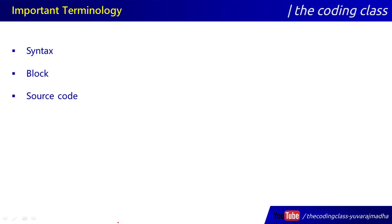Source code: when you first type the program in the editor, save it — that program is called source code. Source code means the actual code you type in the language. You can also call it just 'code.' Object code is the file created when the compiler compiles your program and translates it to machine language. That is called object code, and it contains binary sequence instructions.